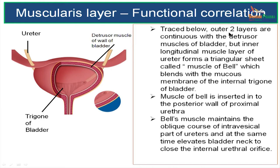The outer two layers are going to be continuous with the detrusor muscle of the bladder. But the inner layer, which is the longitudinal layer of the ureter, forms a triangular sheet of muscle called the muscle of Bell, which is going to blend with the mucous membrane of the internal trigone of the bladder.